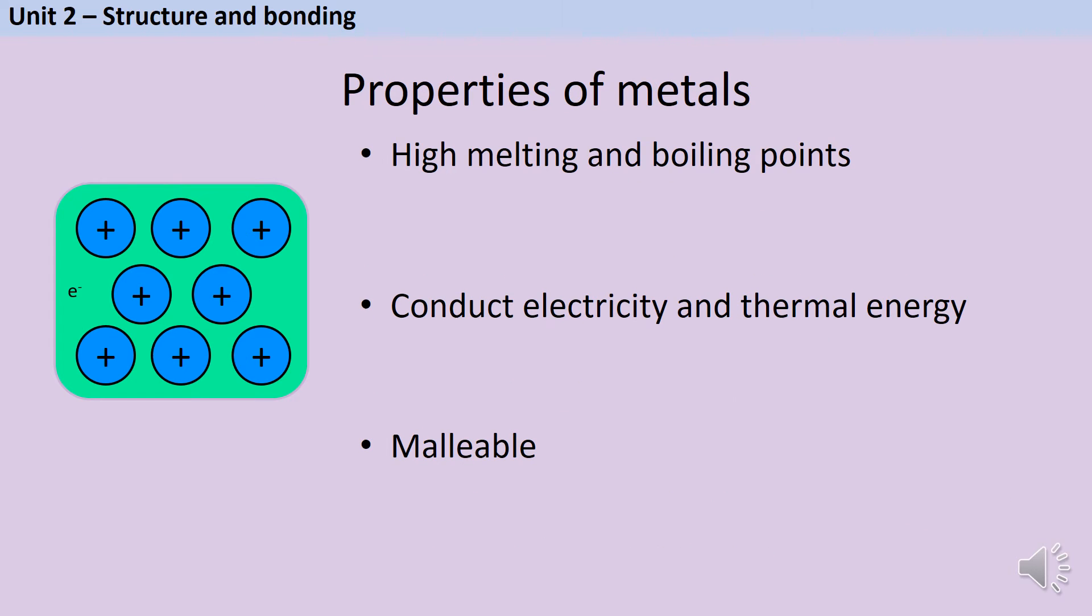Knowing about this structure allows us to explain why metals have three characteristic properties. They have high melting and boiling points, so with the exception of mercury they're solids at room temperature. They conduct both electricity and thermal energy, and they're malleable so pure metals are relatively soft.